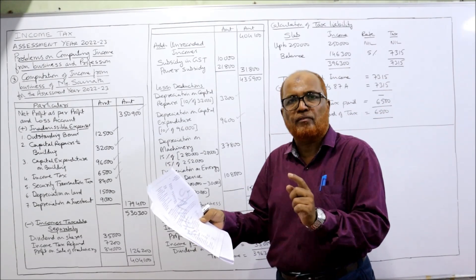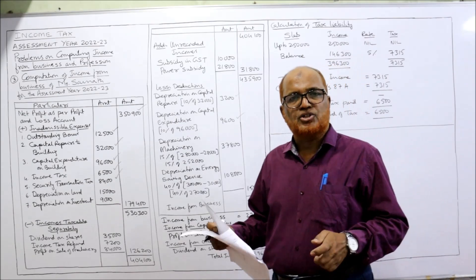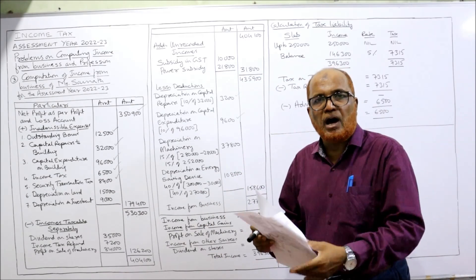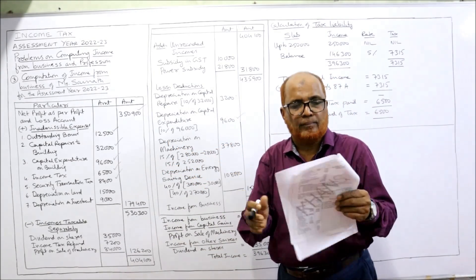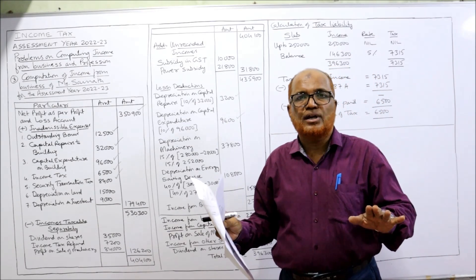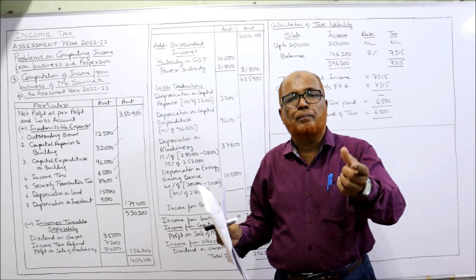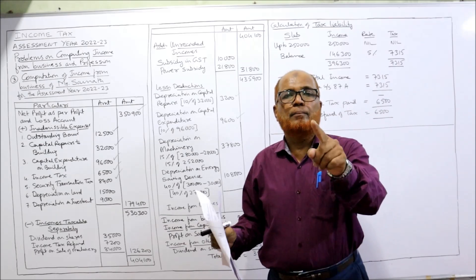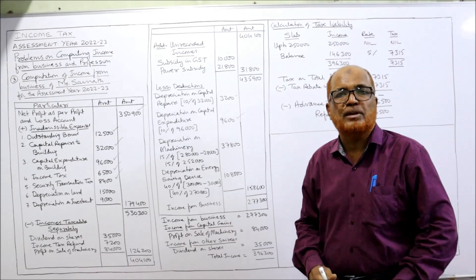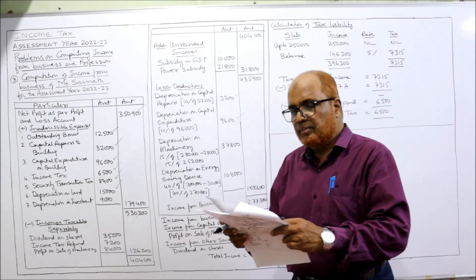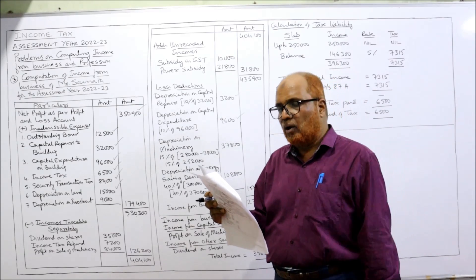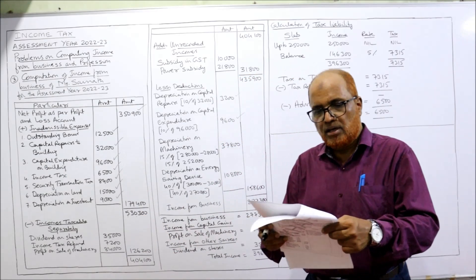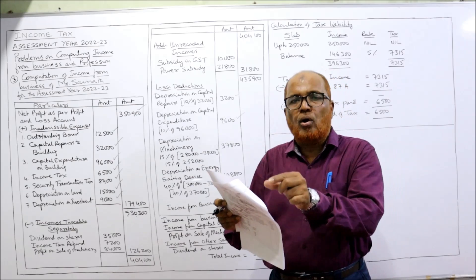Profession tax — allowed as deduction, nothing to be done. GST paid — allowed as deduction; goods and service tax is a business tax. Depreciation on land — not allowed as deduction. Remember: depreciation on building, machinery, vehicle, equipment, and furniture is allowed, but depreciation on land is not allowed as land is not a depreciable asset, so add back depreciation on land. Depreciation on investment — also not allowed according to IT rules, add back. Depreciation on machinery and building — allowed.